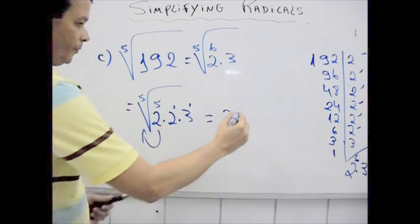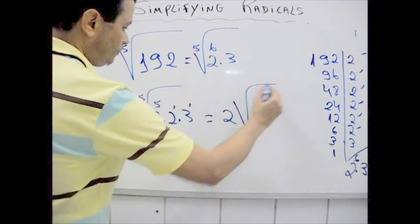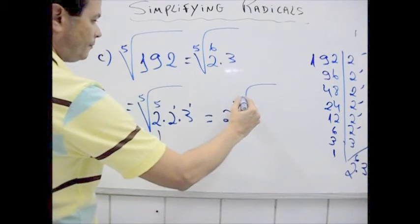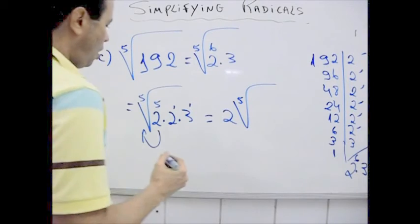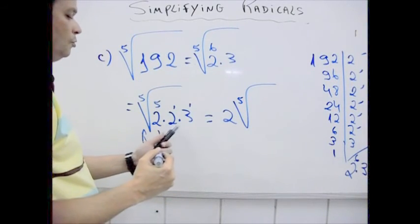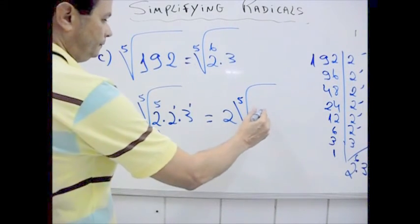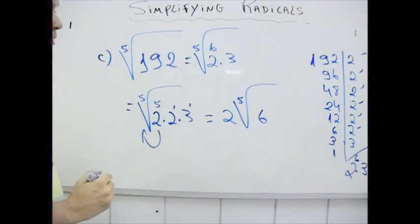So we have here 2 times 5th root of 2 times 3, alright.